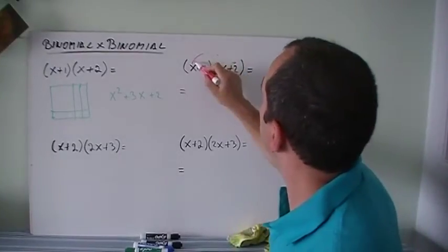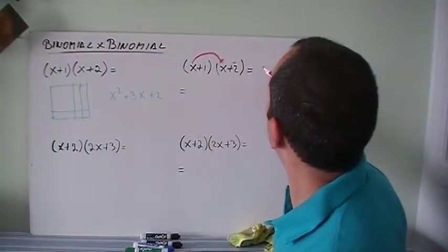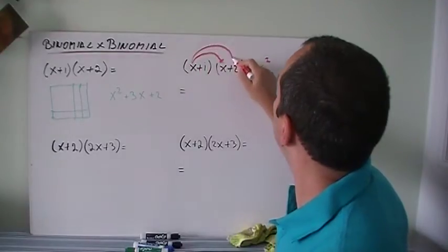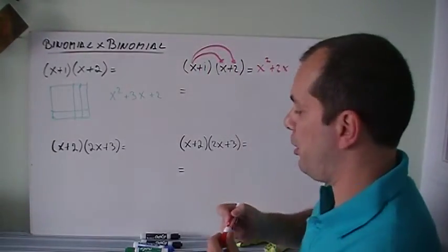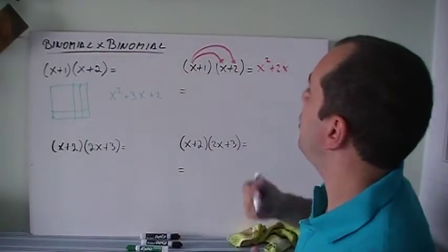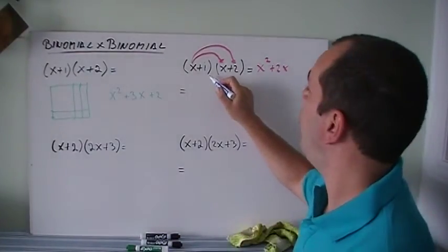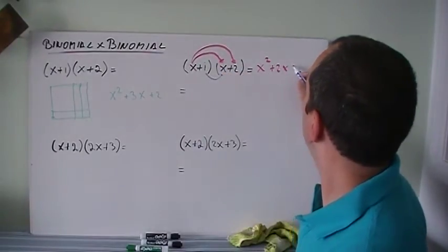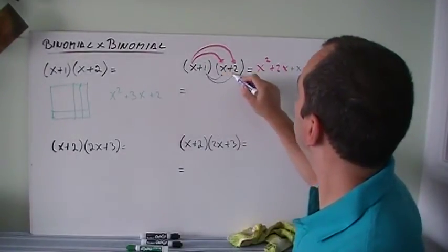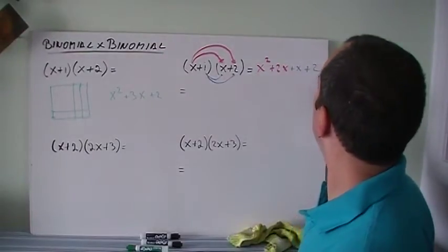So x times x is x squared. And then x times 2 is equal to 2x. Alright. Now I'm going to grab another marker, and I'm going to do the same thing with the 1. 1 times x is equal to x. And 1 times 2 is equal to 2.